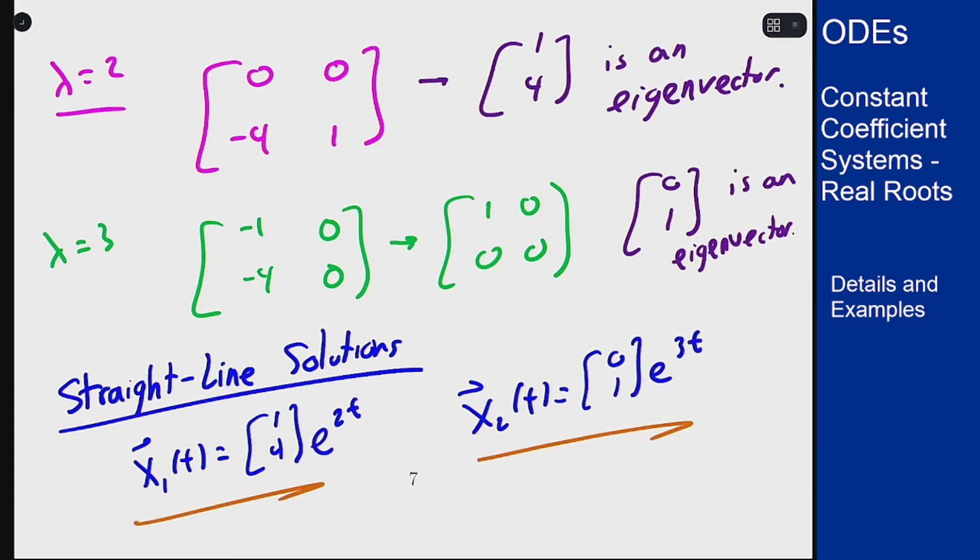There are two straight-line solutions and how we can find them from the eigenvalues and eigenvectors of a matrix.